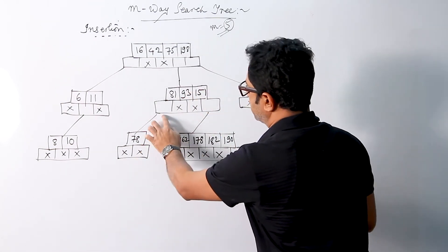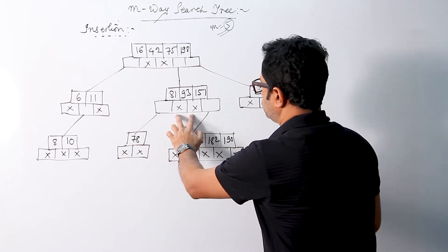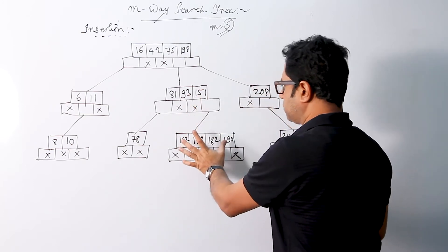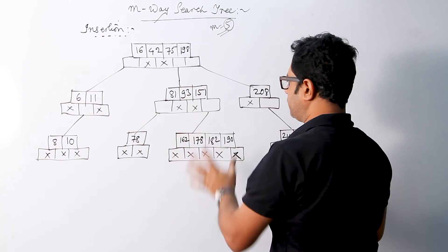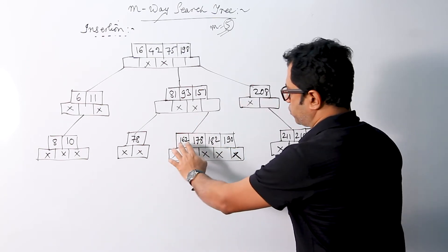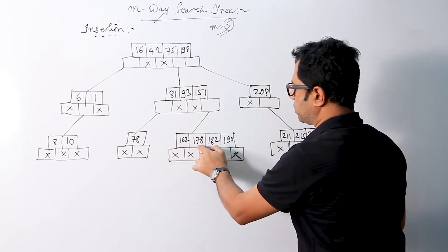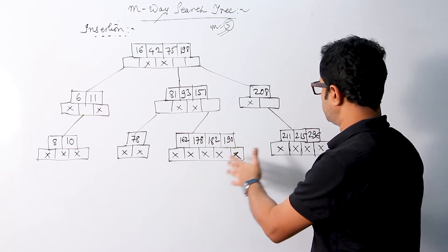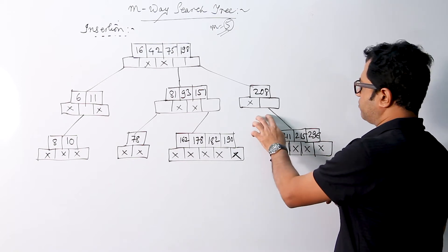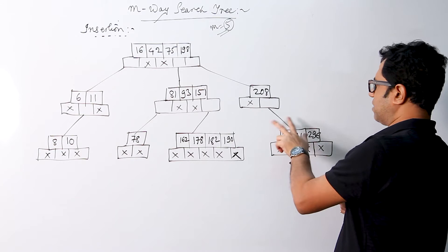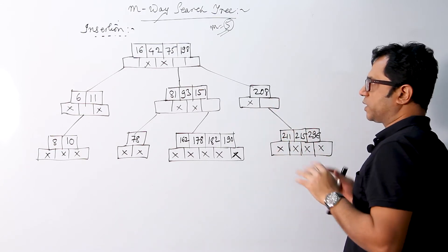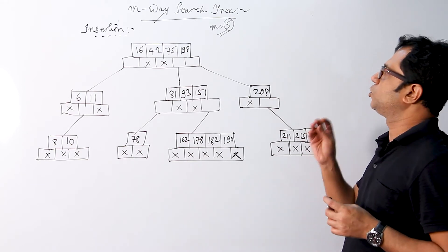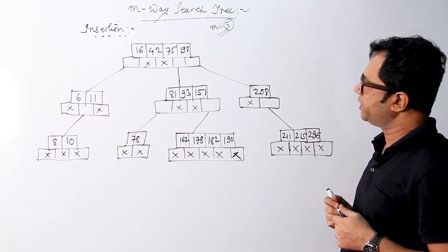We can see there is a null pointer in this case. The value 78 is less than 81, and these two are null pointers. The right pointer of 151 leads to a node having values 162, 178, 182, and 190, all greater than 151. There is also a right pointer from 208 leading to a node with all values greater than 208. So the partitioning of the MVA search tree is correct and we can proceed with the insertion.